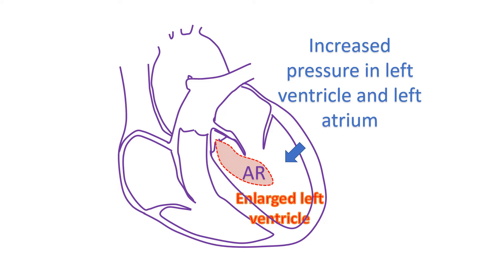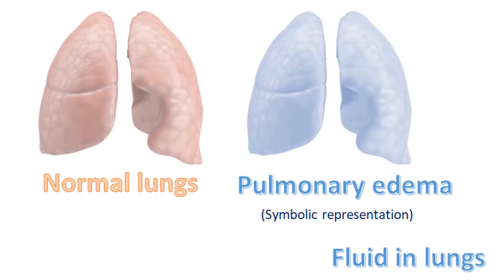When the leak is severe, the left ventricle fails and the back pressure is transmitted to the left atrium, the upper chamber which receives oxygenated blood from the lungs. The raised pressure in the left atrium is in turn transmitted to the blood vessels of the lungs. When the pressure in the blood vessels of the lungs goes beyond a certain limit, fluid collects in the air cavities of the lungs.